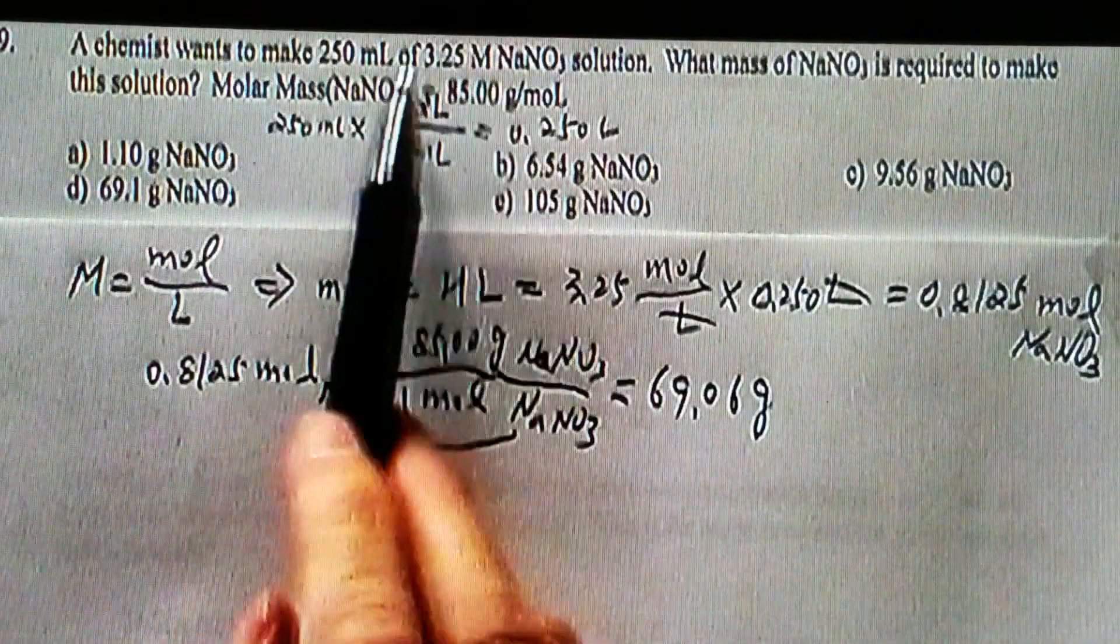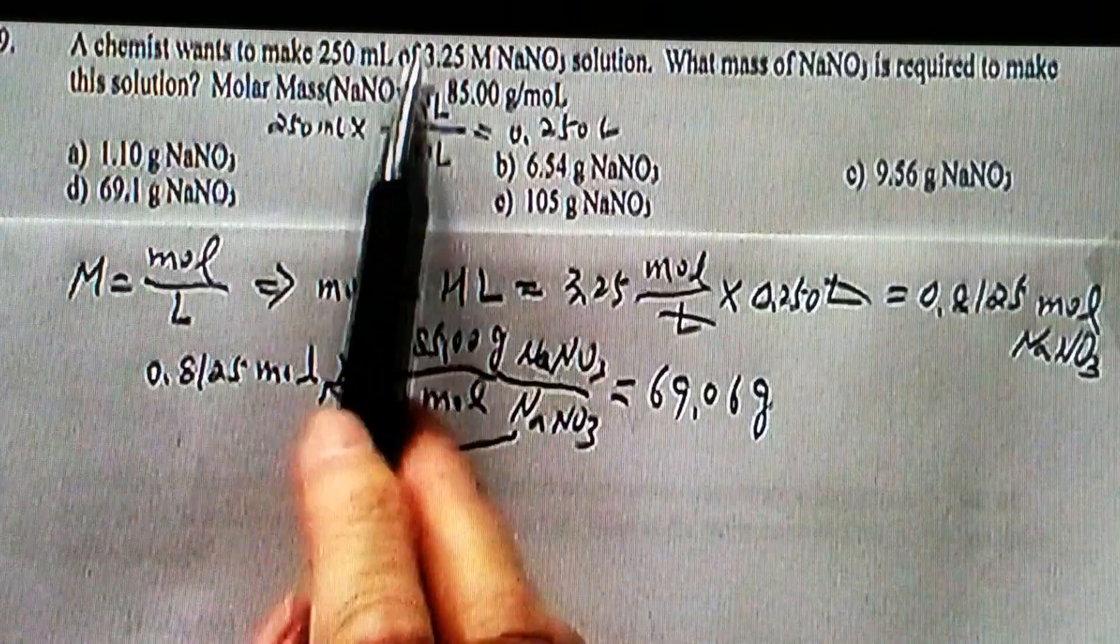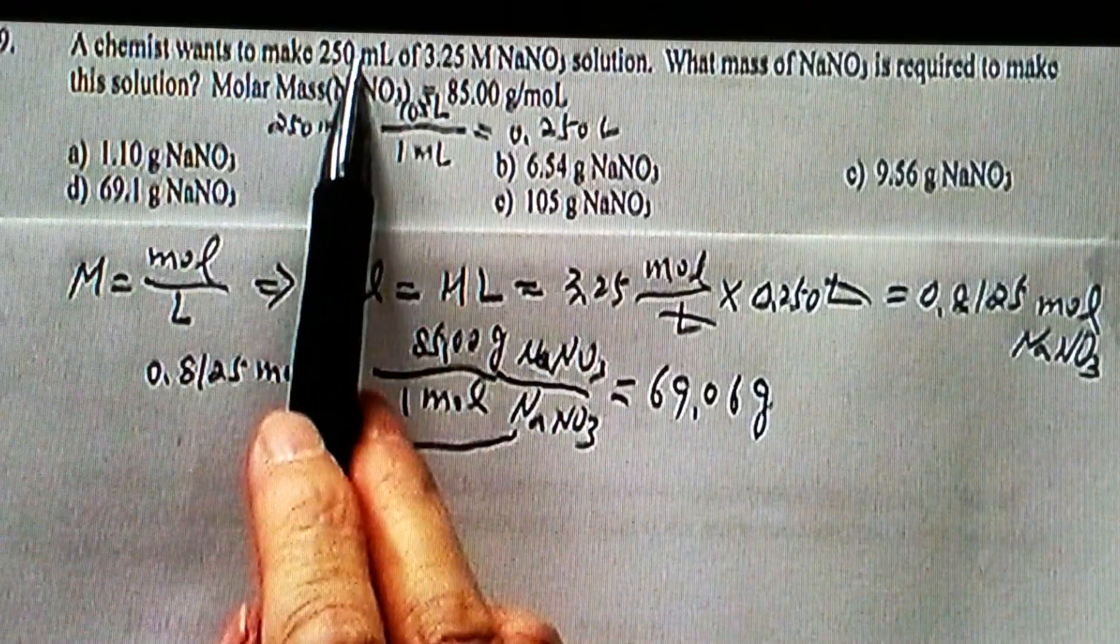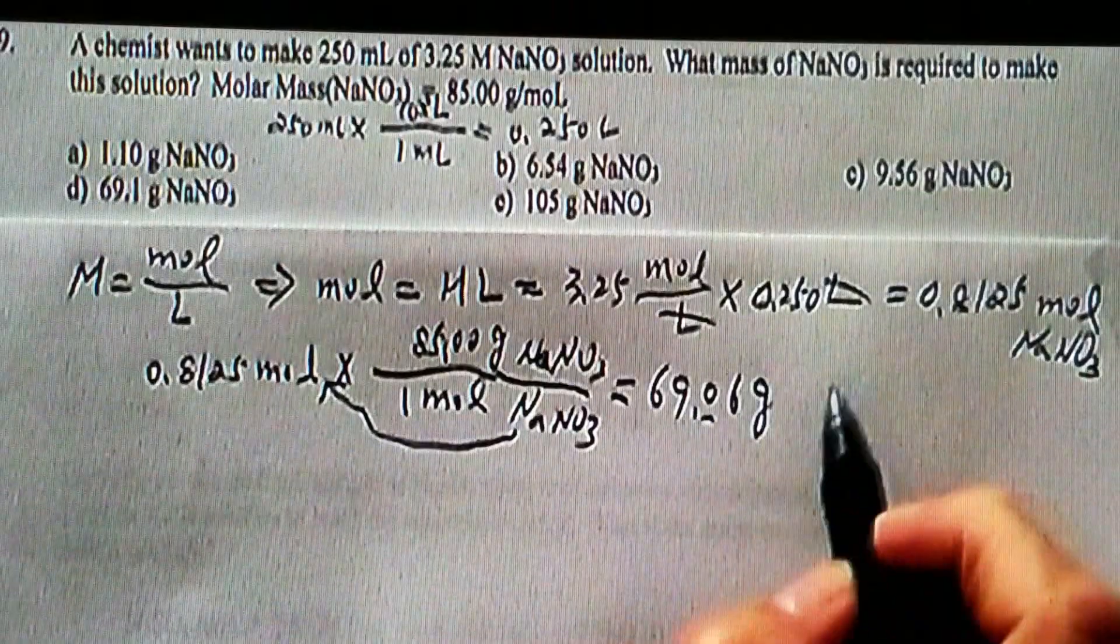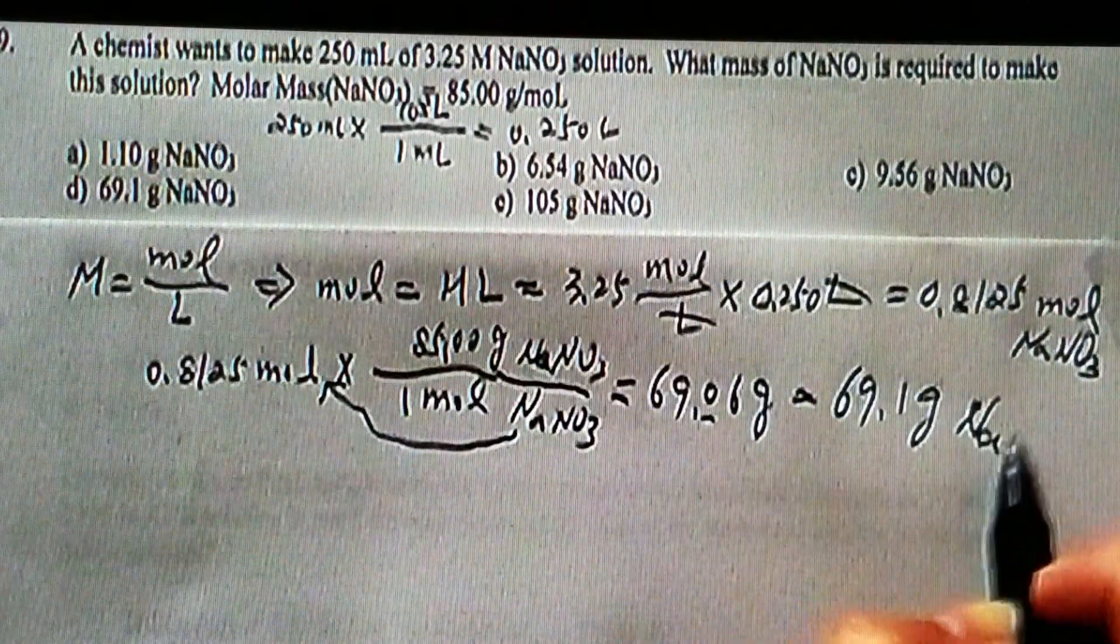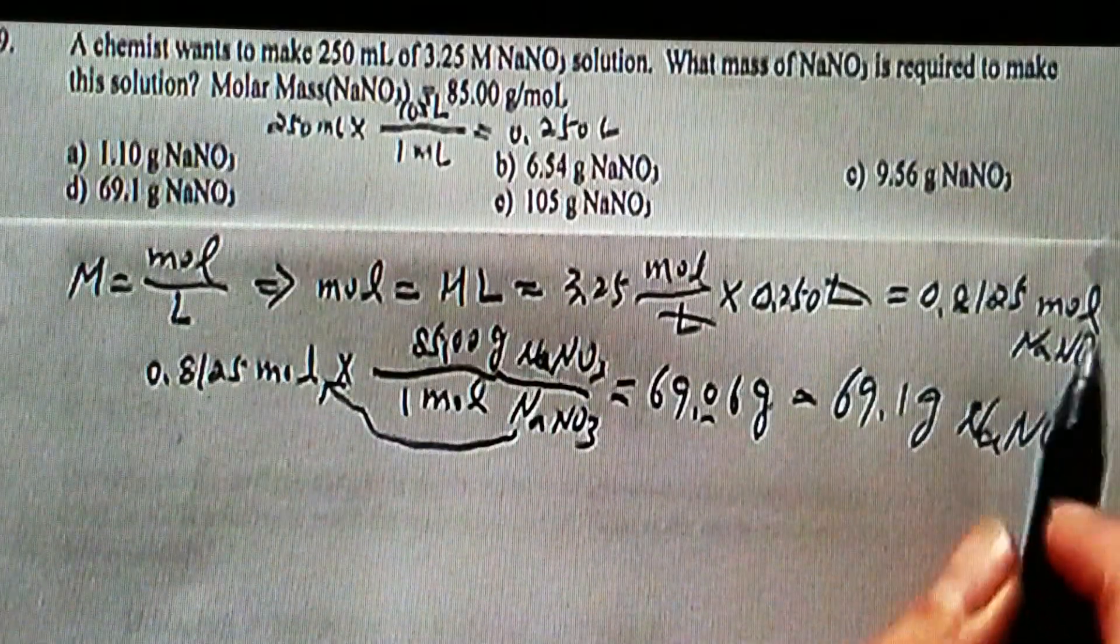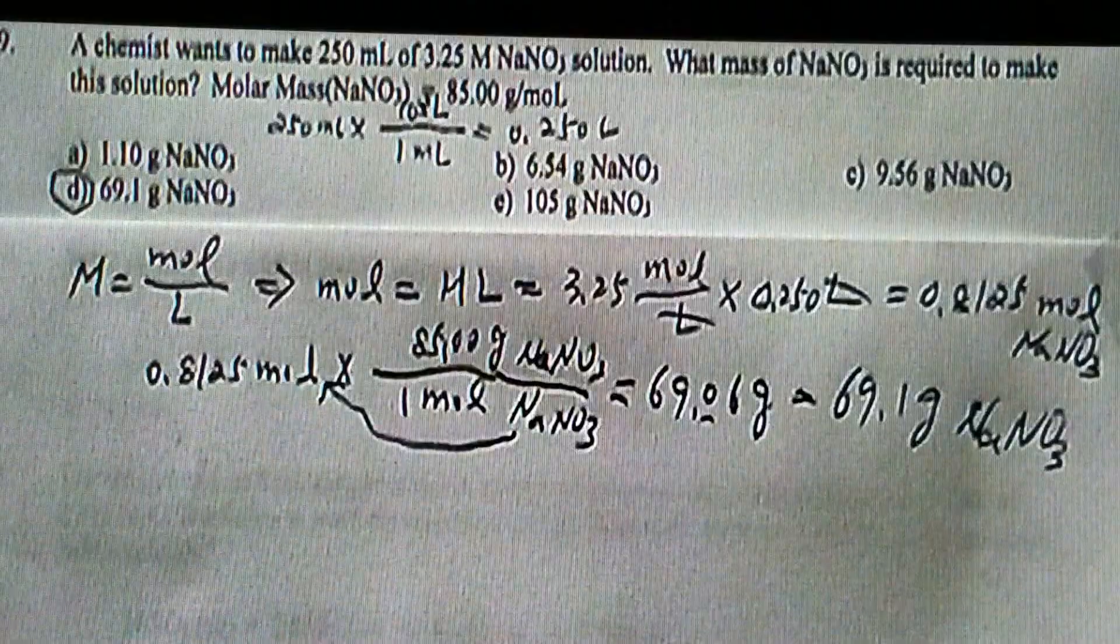So 69.06 grams. And if we go back to the question, the number of sig figs - here it's uncertain, but here definitely that's 3. So therefore 69.1 grams sodium nitrate, and that should be choice D.